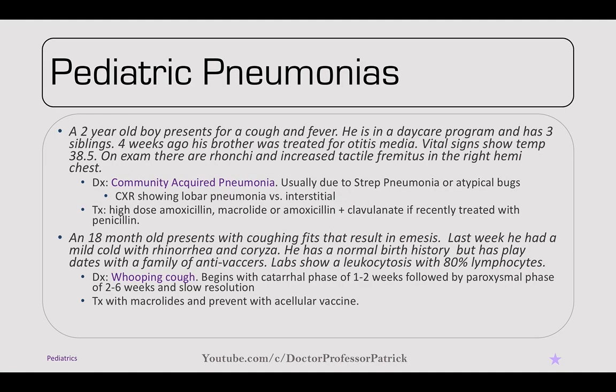A two-year-old boy presents with a cough and fever. He's in daycare and has three siblings; his brother was treated for otitis media four weeks ago. On exam, there are rhonchi and increased tactile fremitus in the right hemichest. Diagnosis is community-acquired pneumonia, usually due to Strep pneumoniae or atypical organisms. Chest x-ray may show lobar or interstitial pneumonia. Treatment is high-dose amoxicillin, or a macrolide or amoxicillin-clavulanate if treated with penicillin within the past month.